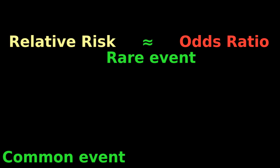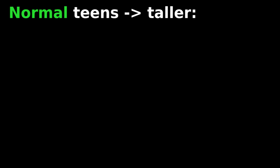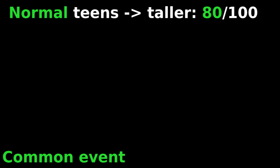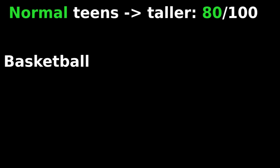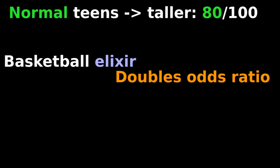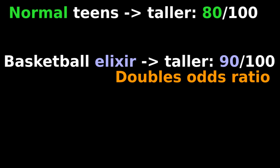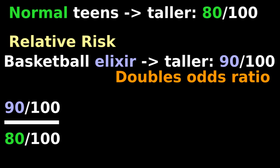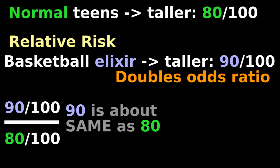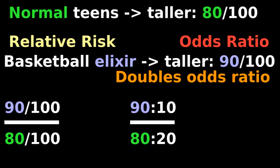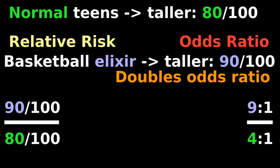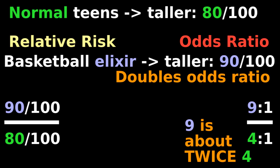When it's a common event, the odds ratio can exaggerate misleadingly. Normally, teenagers keep growing taller — it's common, let's say 80 out of 100. If your son wants to be a basketball athlete, should he buy an elixir that approximately doubles the odds ratio that he will grow taller? The elixir resulted in 90 out of 100 growing, so the change in relative risk does not sound impressive. However, the odds ratio sounds impressive: 8 to 2 equals 4 to 1, compared to 9 to 1 — so it does double your odds ratio, since 9 is about twice as much as 4.